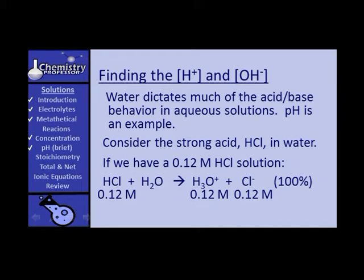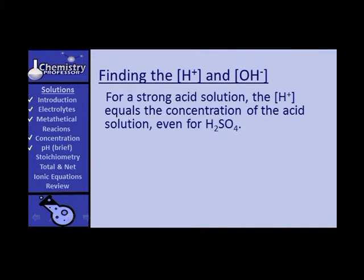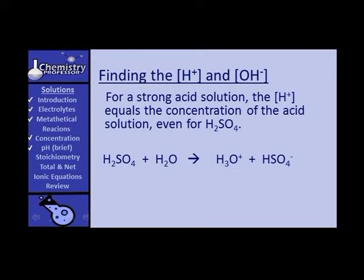What happened to the HCl molecule? It doesn't exist anymore. For a strong acid solution, the concentration of the hydrogen ion is the same as the concentration of the acid solution. That even holds true for sulfuric acid. When sulfuric acid dissociates, it forms a hydronium ion and a bisulfate ion. The bisulfate ion is a weak acid and does not dissociate readily, so it does not contribute a lot of hydrogen ion to the solution.